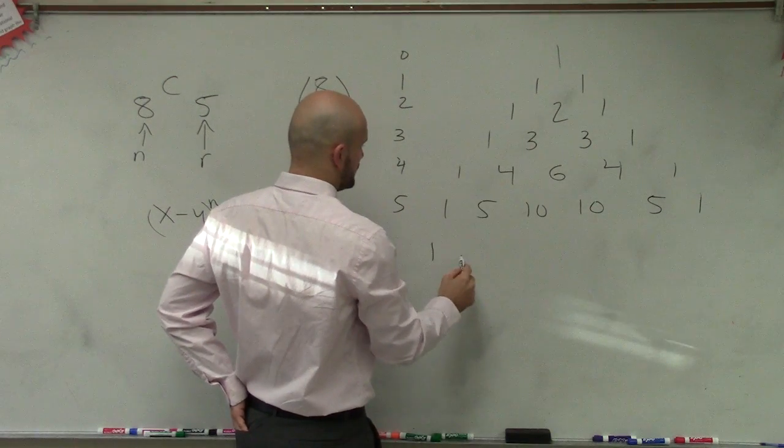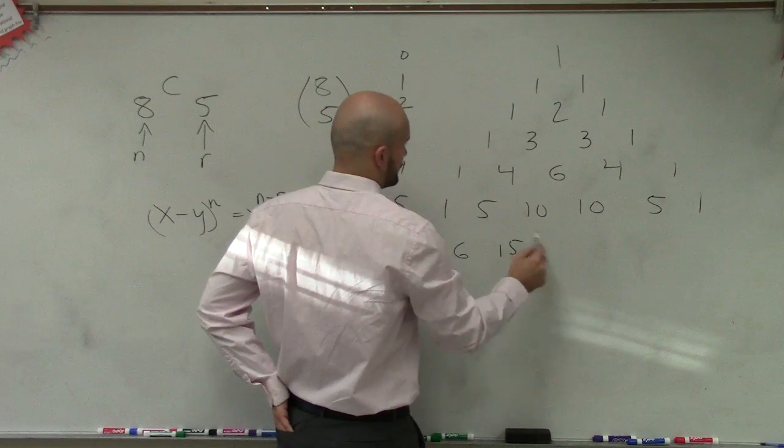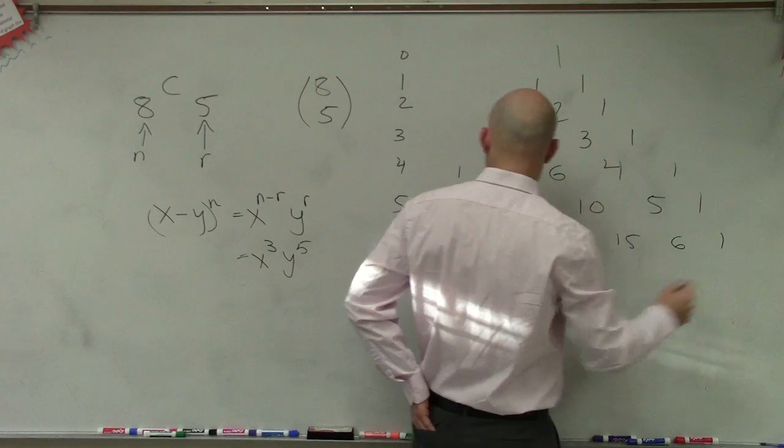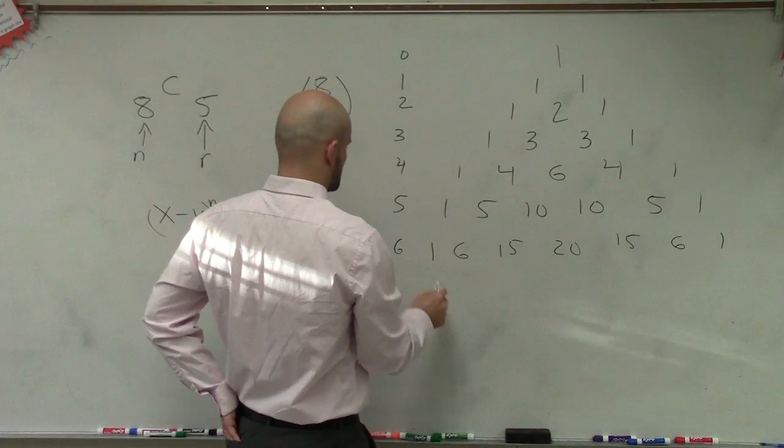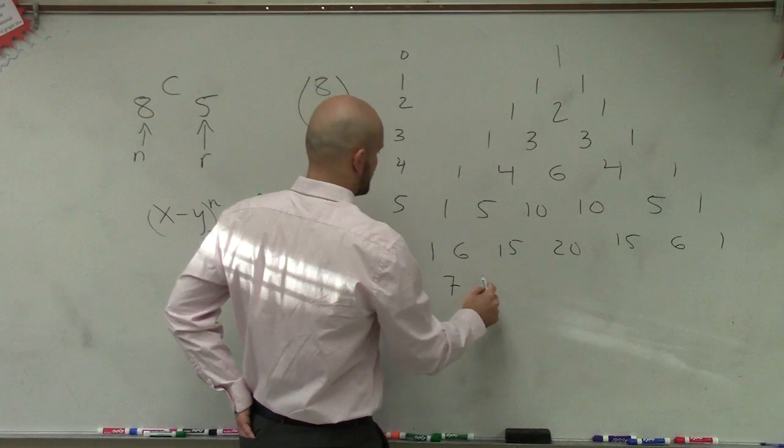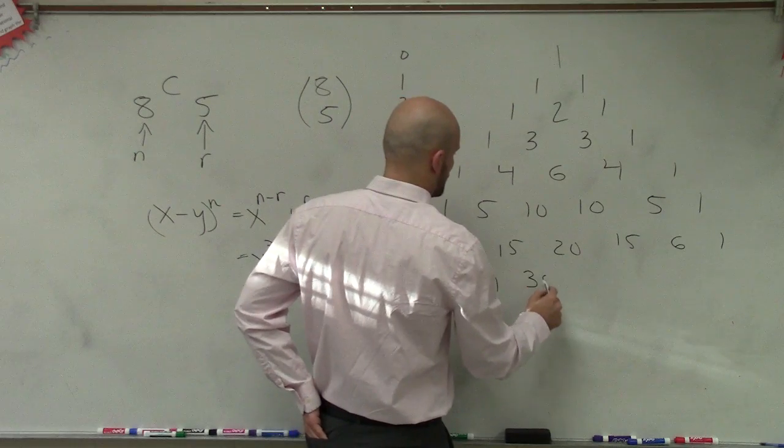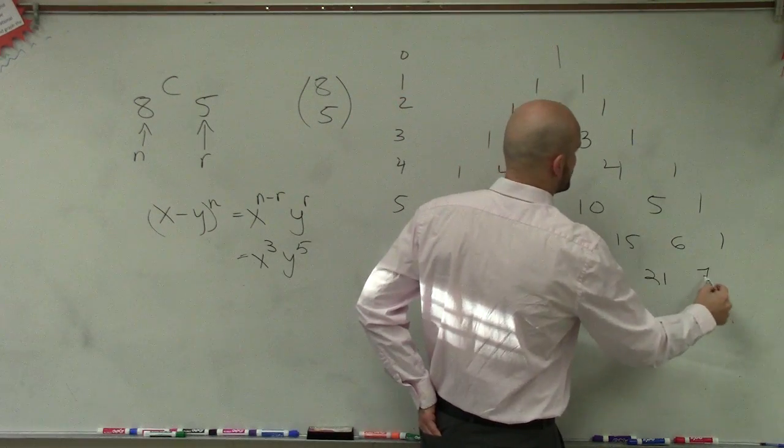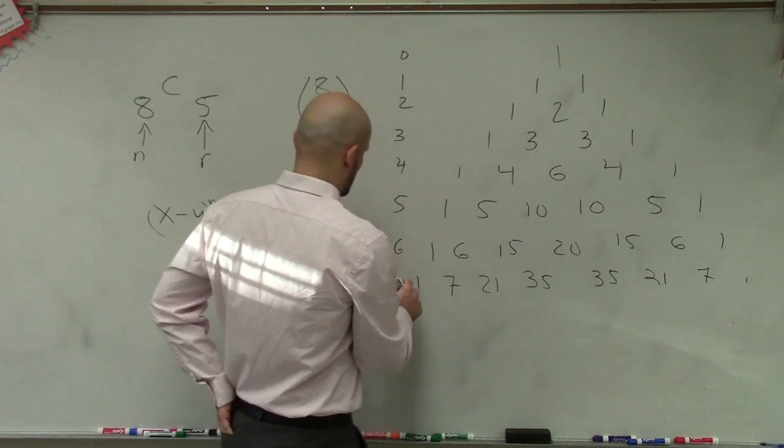And then we have 1, 6, 15, 20, 15, 6, 1. So that was 6. And then we have 1, 7, 21, 35, 35, 21, 7, 1. So that was 7.